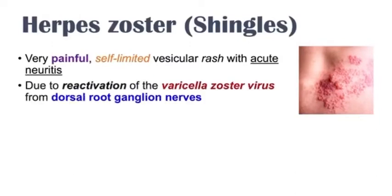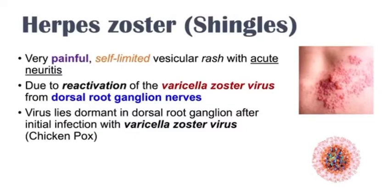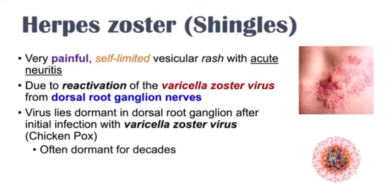Shingles or herpes zoster is due to reactivation of the varicella zoster virus from dorsal root ganglion nerves. The virus lies dormant in dorsal root ganglion after an initial infection with varicella zoster virus, which causes chickenpox. So in order for an individual to actually get shingles, they would have had to have had an infection with chickenpox virus sometime in their life prior. That's very important.